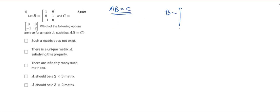We are having B as 1, 0, -1, 0, 1, and 0. And we are having C here as 0, 0, -1, and 2.